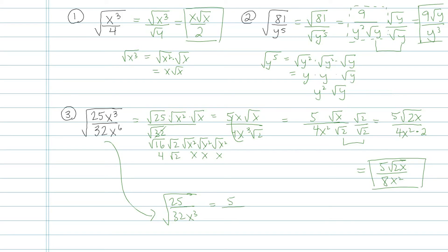And then to go from there, I'd have 5 over, and then same idea on the bottom, I'd have 4 root 2 times square root of x squared root x. That's going to give me the same answer, but just a little bit faster.